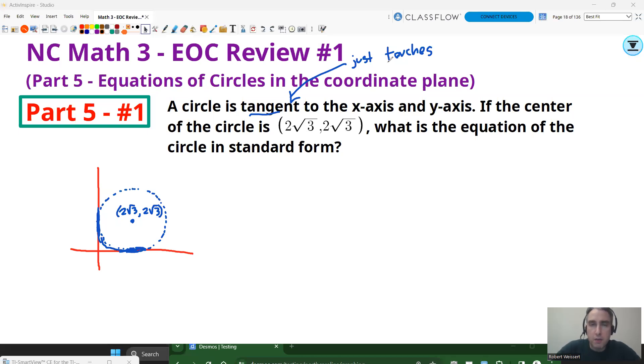What this question is really saying is you have a circle in quadrant one with a center of 2√3, 2√3. Tangent means that it just touches the line. It doesn't actually go over or cross it. So, it's actually going to all be in quadrant one here. This is actually going to touch the y-axis and the x-axis here. So we can actually figure out the radius because the radius is going to be that same length as the x or the y value. So that radius is actually also going to be 2√3.